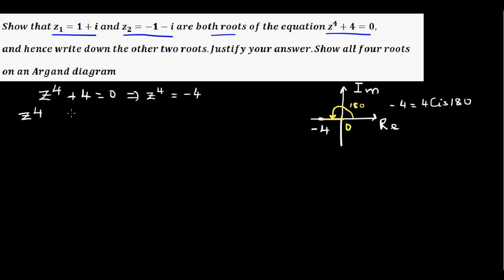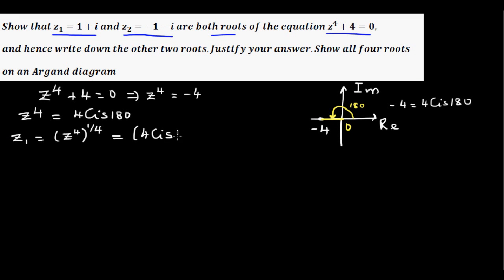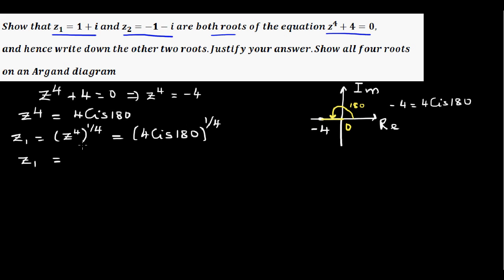So z⁴ = 4 cis 180°. Now, using De Moivre's theorem, we raise both sides to the power of one quarter. So z = (4 cis 180°)^(1/4). Applying De Moivre's theorem, we raise the modulus by the power and multiply the argument by the power: 4^(1/4) cis (180 × 1/4).